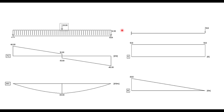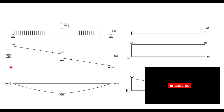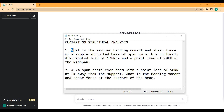The second example is a cantilever beam with a concentrated load at the free end. I used BeamMax software to analyze this — if you've been following the channel, I've already created a video on how to analyze beams using BeamMax, which is an open-source software for simply supported, continuous, and cantilever beams. It generates shear force diagrams, bending moment diagrams, and displacement. Now I'll ask ChatGPT to analyze these beams and give me the maximum shear force and bending moment.